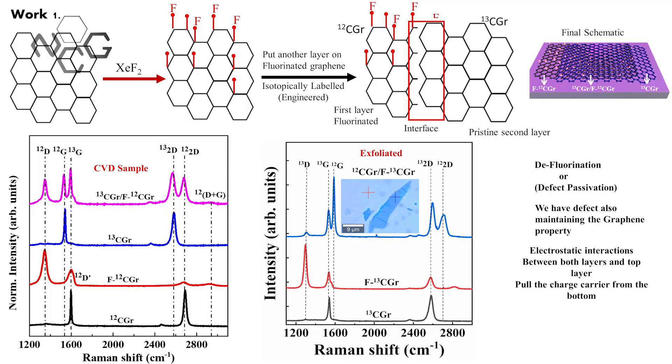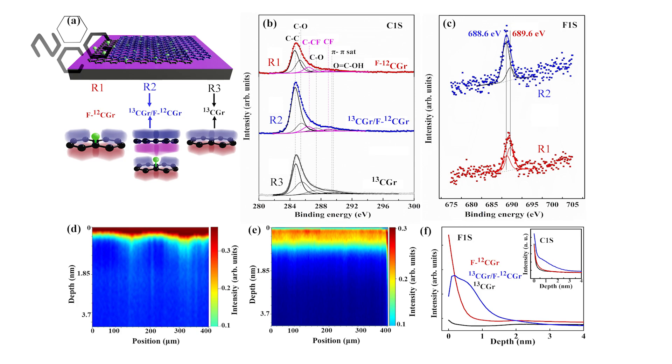In our recent study, we take graphene, do the fluorination so that fluorine atoms attach to the graphene surface forming a carbon-fluorine bond. Since fluorine is not stable on the graphene surface, our idea is to put another layer of graphene on top, creating three regions: fluorinated graphene, a sandwich heterostructure, and pristine graphene. Using isotopically labeled graphene with distinct Raman modes, we studied Raman spectroscopy and found that at the heterostructure interface, fluorographene and pristine graphene have an electrostatic interaction that stabilizes the fluorine on the graphene surface.